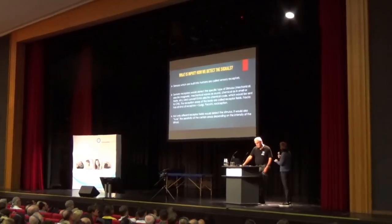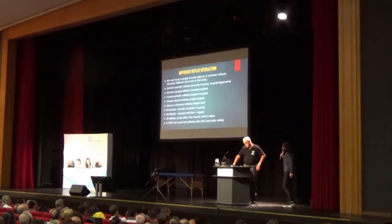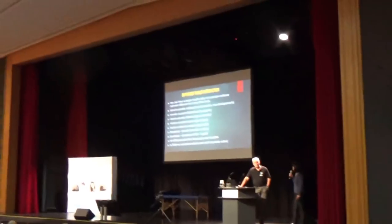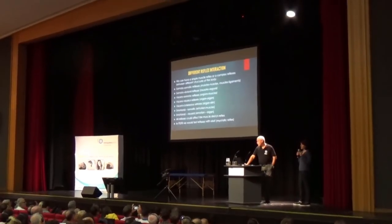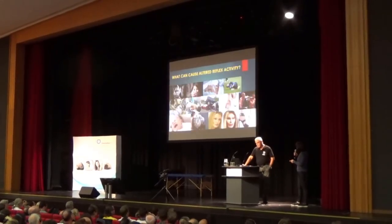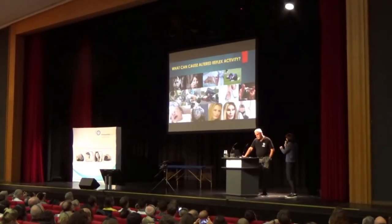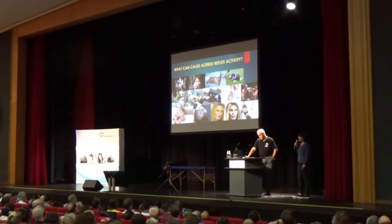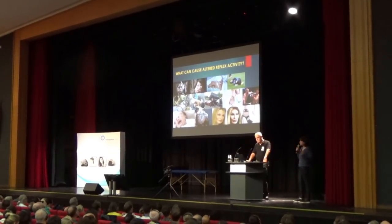We have different kinds of reflexes: somatosomatic (muscle to muscle), and somatovisceral (muscle to organ) — all of them can be affected by one nociceptive stimulus. Our modern life is not in line with our biological reflexes. We have childhood traumas, sports injuries, and all kinds of things that cause reflex alteration.